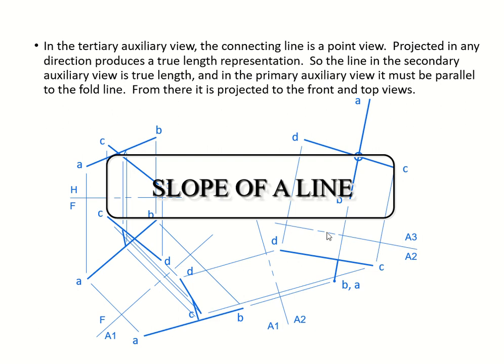So the same problem we ended up with a connecting line right here in our tertiary auxiliary view is a point view. And if we project in any direction, you're going to get your true line representation.